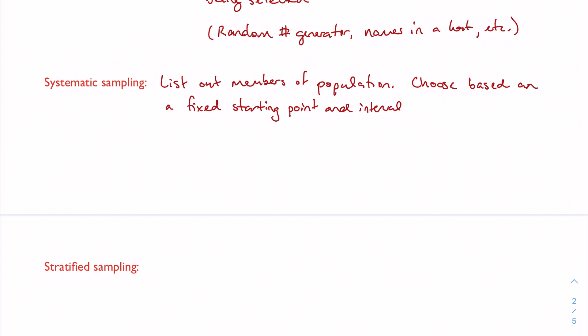So this would be to say, I don't know, starting at the fifth name and I'm going to choose every 10th name until I've reached enough subjects to create a large enough sample. So obviously it's in the name, I'm being systematic with the way I'm selecting the members out of my sampling frame to create a sample.